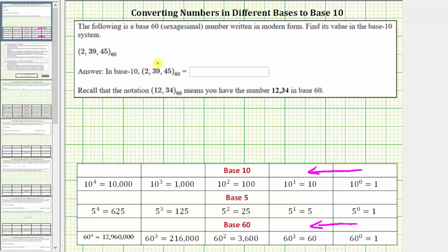Going back to the given number in base 60, again we have 2, 39, 45 in base 60. Starting with the place value on the far right, the 45 is in the 60^0 or ones place, the 39 is in the 60^1 or sixties place, and the 2 is in the 60^2 or 3,600s place.